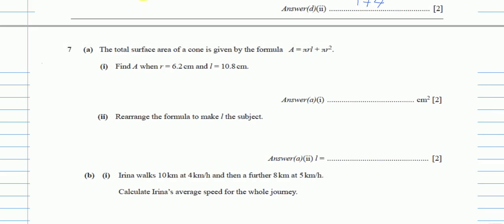Question number 7. We are given the total surface area formula: A equals π r l plus π r squared, and we are given the values of r and l. All we have to do is find the value of A.